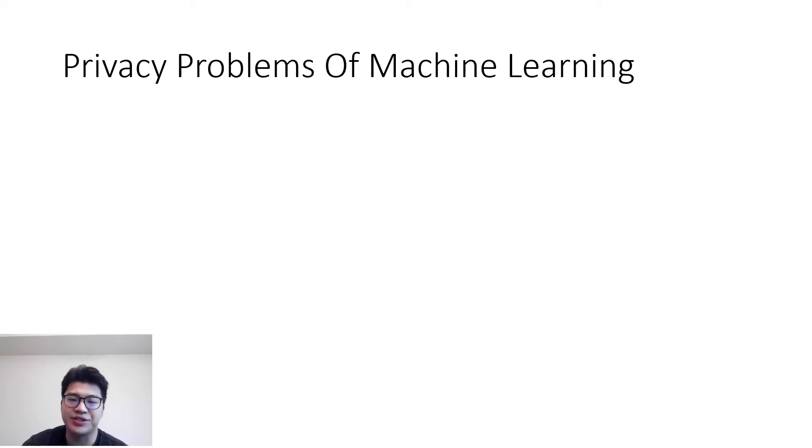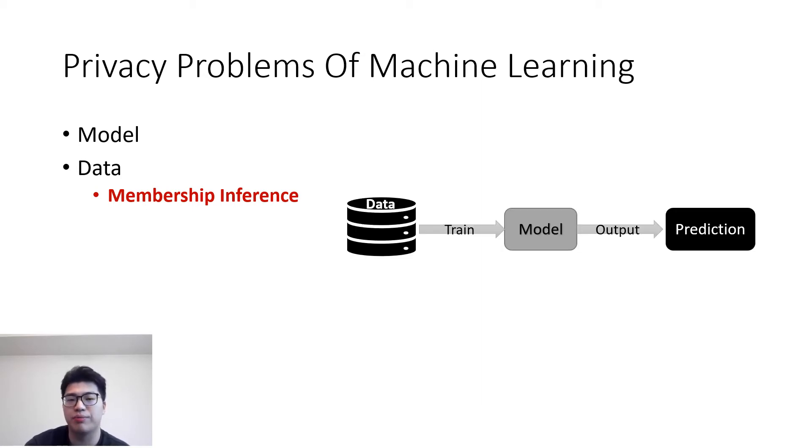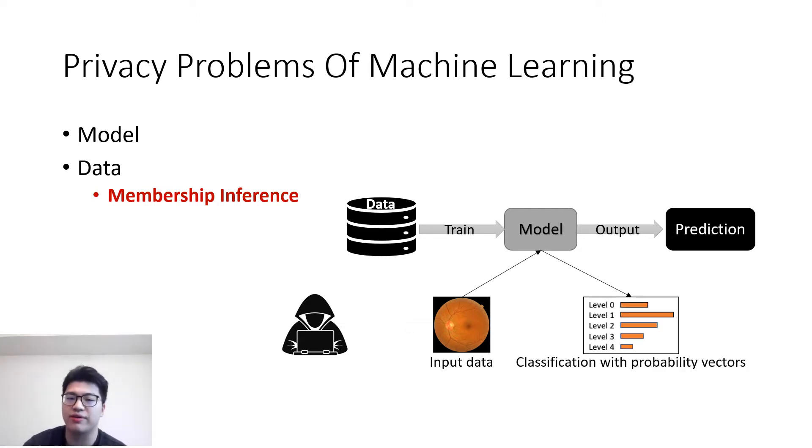There are two major concerns of privacy in machine learning. The first one is the model itself, which can be stolen by model extraction attacks. The second one is data used to train the model. A type of this inference attack that is the focus of the paper is the membership inference attack, whereby an adversary infers whether a specific sample belongs to the training set of a given learning model or not. The attacker achieves this goal by using a lot of input data to query the target model and observing the output classification with probability vectors to get the final decision.